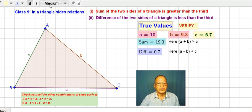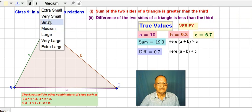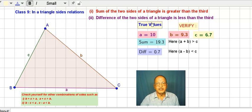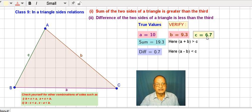Now, these are the true values. What we are getting here. We will verify here. With these values, the true values are obtained. A is 10, B is 9 and C is 6.7.